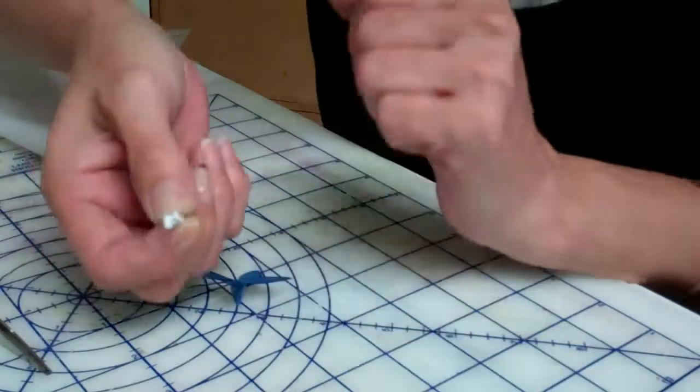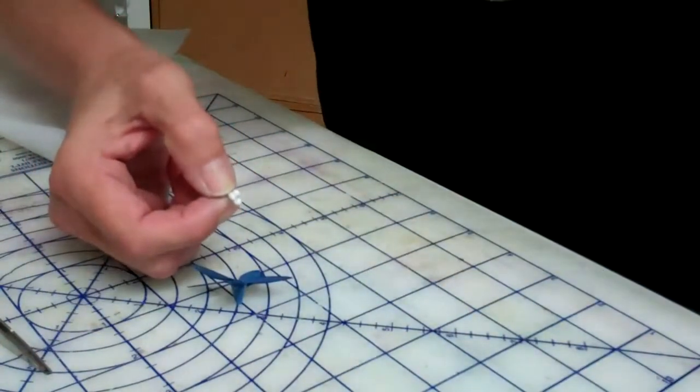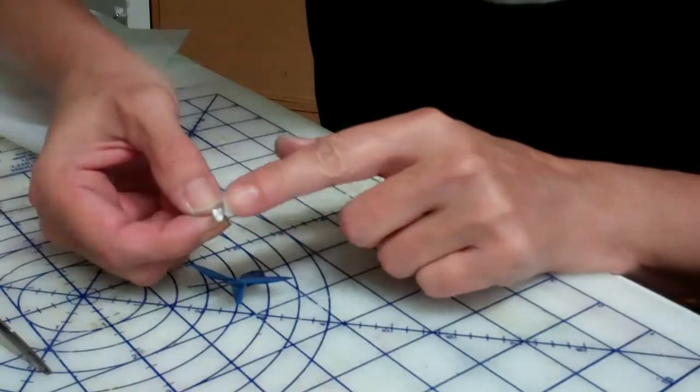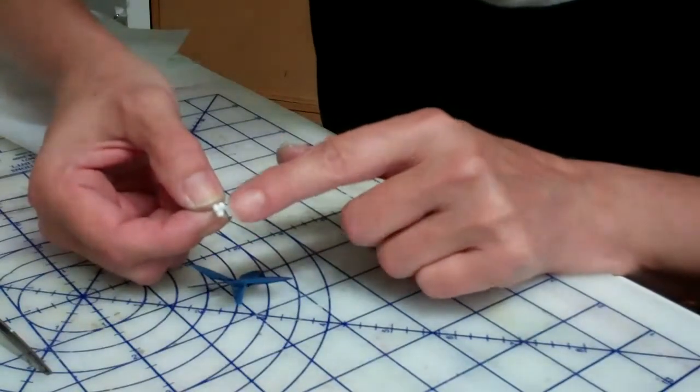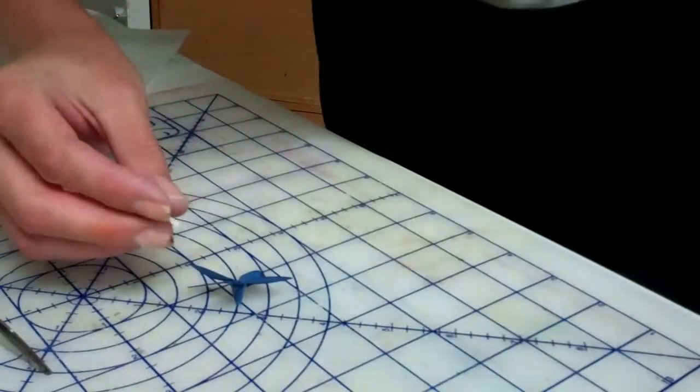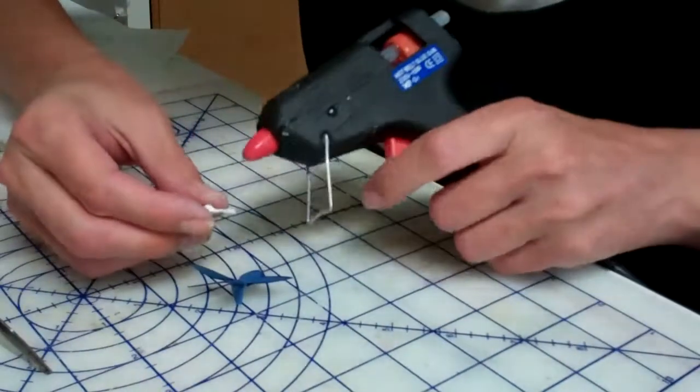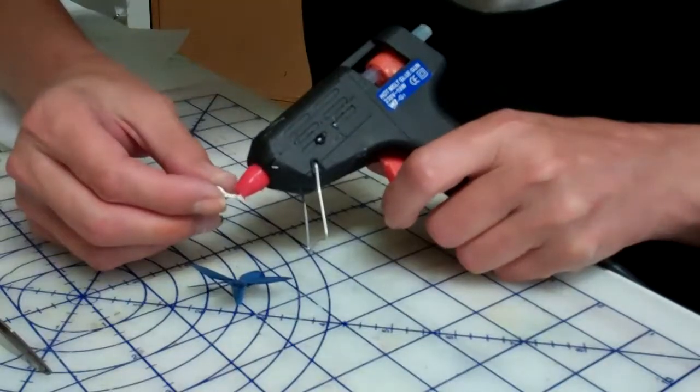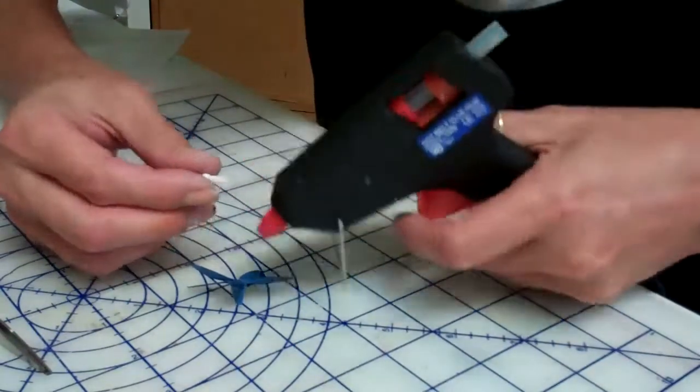I bought them at a bargain store and they were silver so I painted them white. And then I just glued them together at the tips and then just put a little hot glue on there.